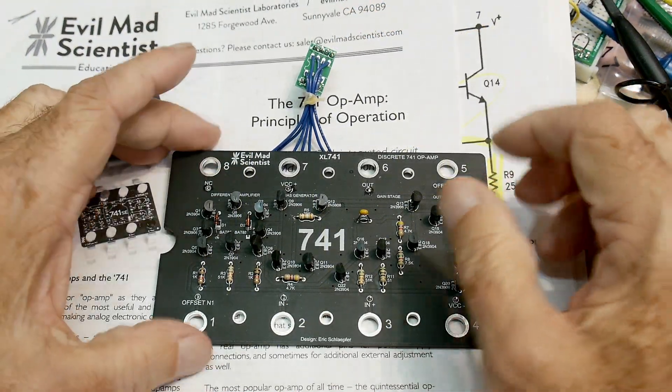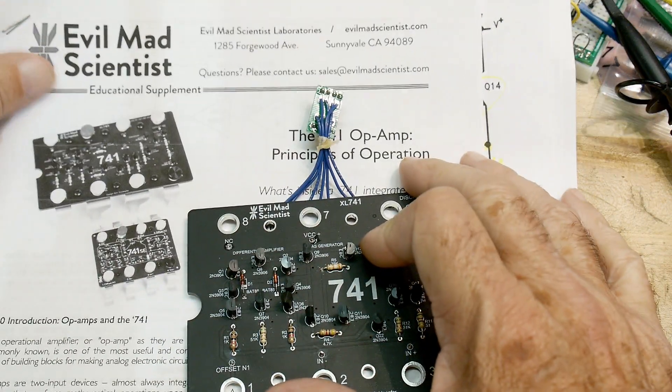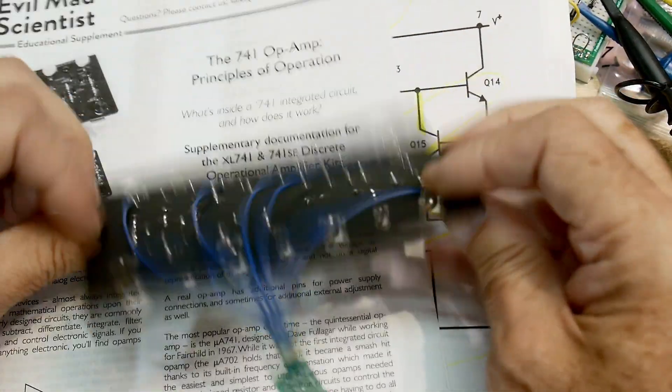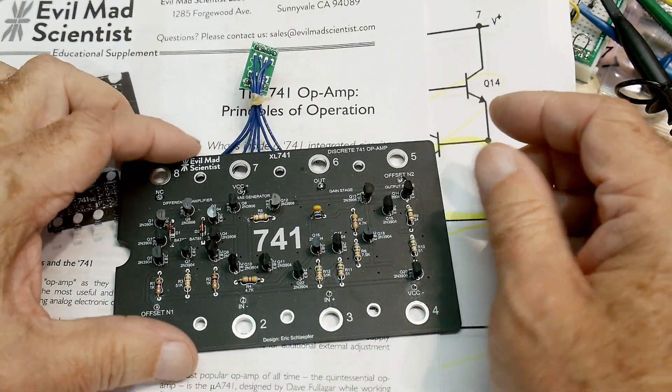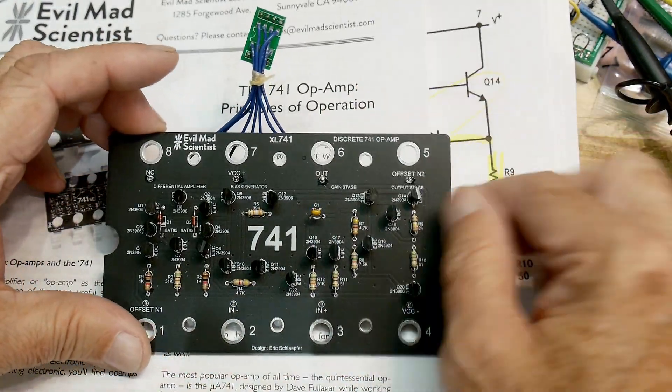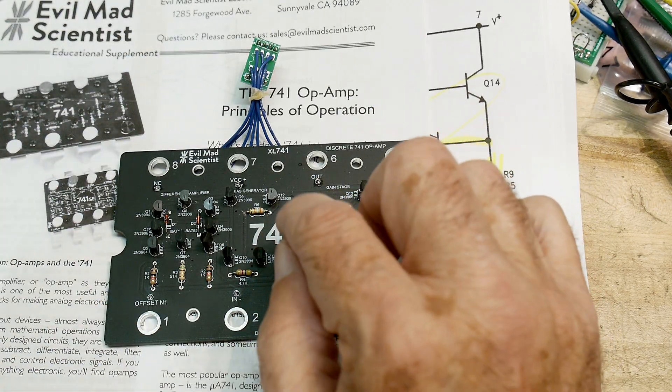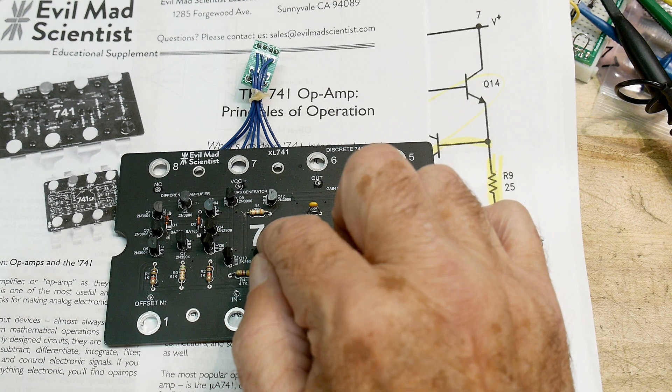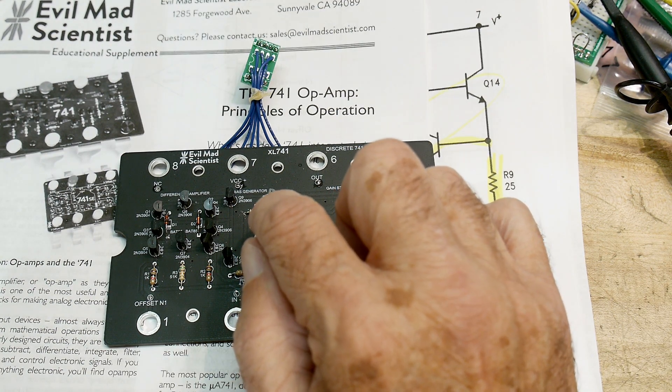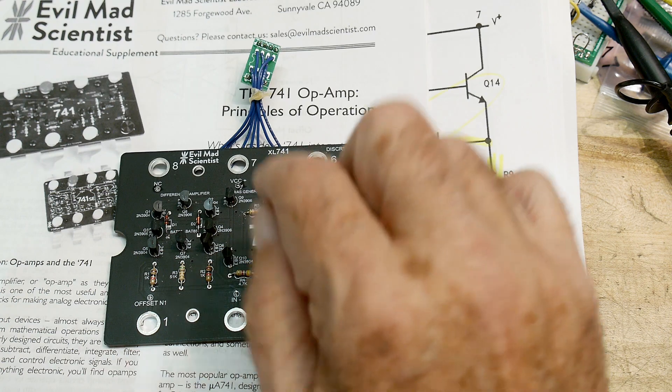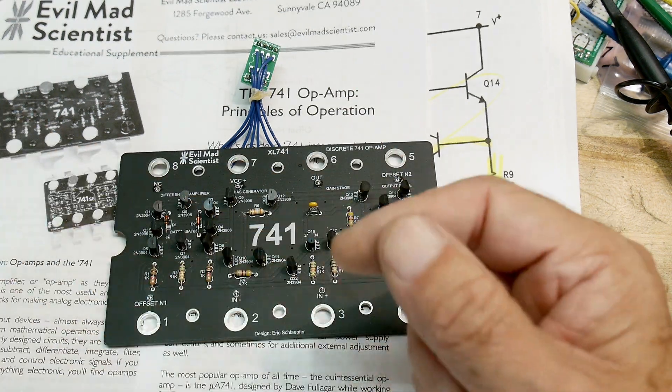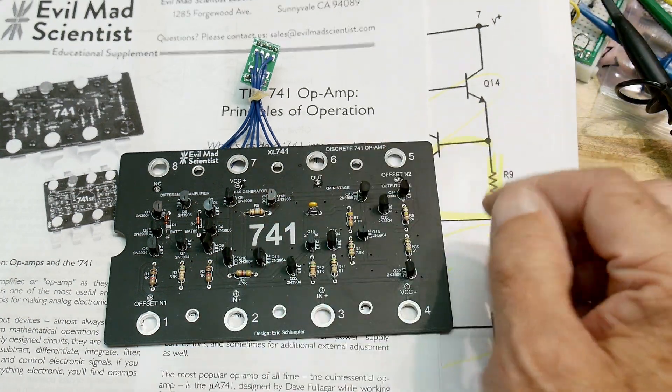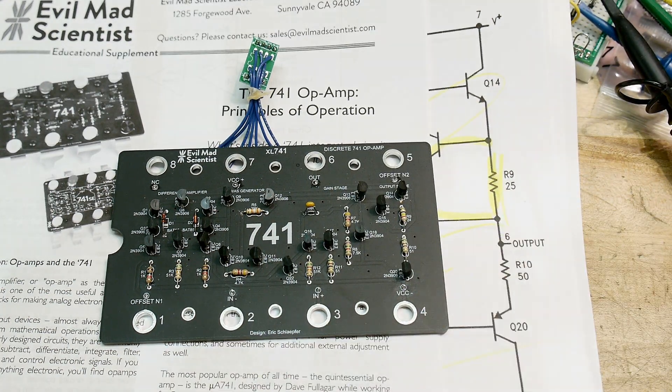That's enough for this series. This again was from the Evil Mad Scientist, 10 bucks for the PC board. And I think it's a great learning tool. And 741 was a company's answer to a Signetics part. I think Fairchild wanted to one up the Signetics part that Bob Widlar had done. And this was designed by somebody else, different company. And I'll see you later.